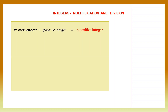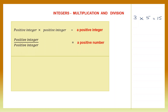Suppose I take a positive integer 3 into another positive integer 5 — 3 fives are 15. Now let's take division. When you divide a positive integer by another positive integer, your answer is a positive number.